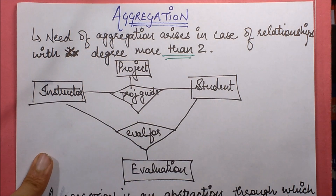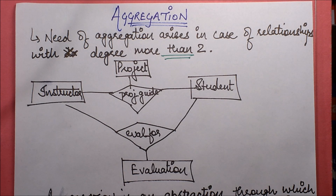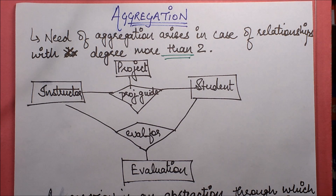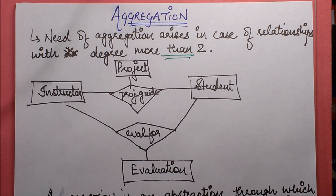That was an explanation of this ER diagram. As you can see, whenever a relationship has a degree more than two, we generally say that it is a complex relationship type and we should avoid such relationships. The best design is one which can be expressed with the help of binary relationships — therefore the guideline is to try to convert your relationships to binary relationships, which are degree two. So let's see how aggregation helps us simplify or clarify such relationships in a better manner.